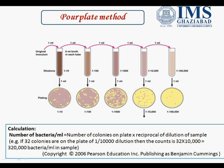In the pour plate method, we take tubes containing 9 ml of solution, take a 1 ml sample, and transfer it into the 9 ml broth. We then do serial dilution up to 10 to the power of 4 to 5 dilutions. This is because 1 gram or 1 ml of sample can contain many types of bacteria that cannot be easily identified. In the first dilution, there are uncountable bacteria.